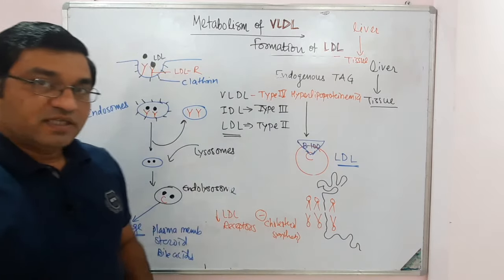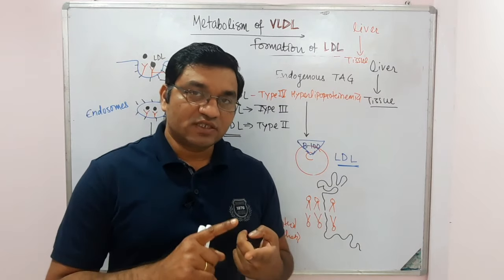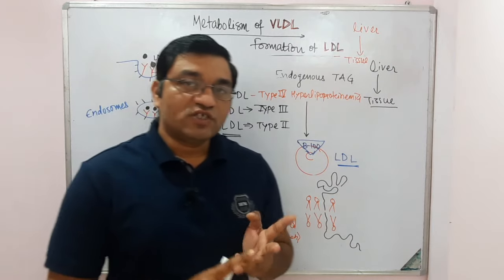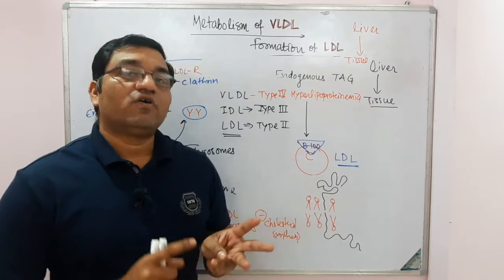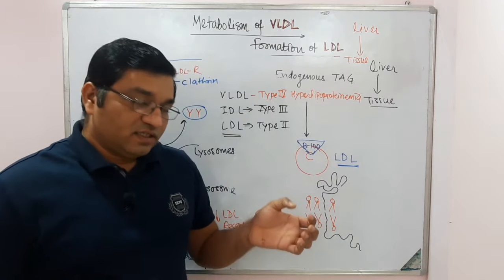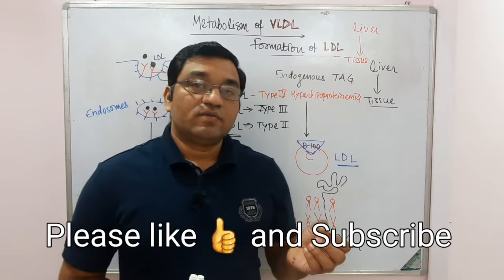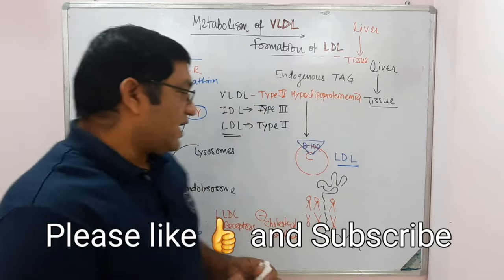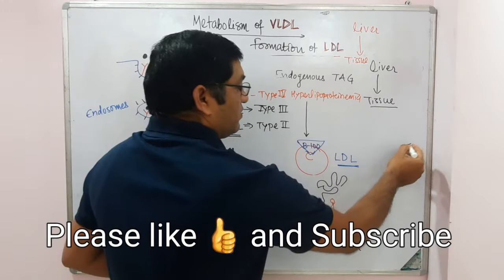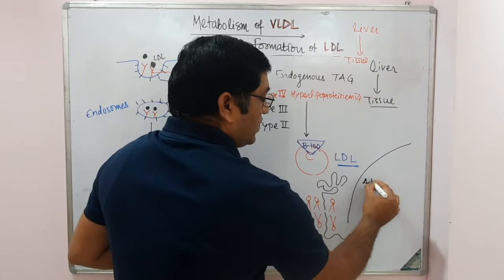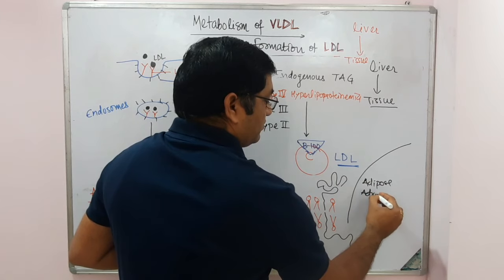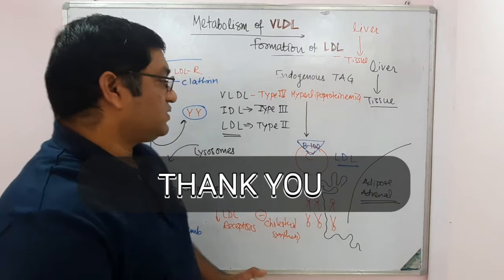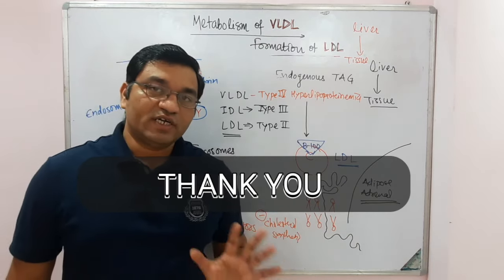In summary, there are four important steps in VLDL metabolism: first, synthesis of nascent VLDL; second, maturation; third, formation of IDL or VLDL remnant; and fourth, formation of LDL from IDL. The TG content decreases while cholesterol content increases from VLDL to IDL to LDL. LDL is mainly taken up by peripheral tissues including adrenal glands, adipose tissue, and the liver via LDL receptors requiring ApoB100. Keep watching. Thank you.